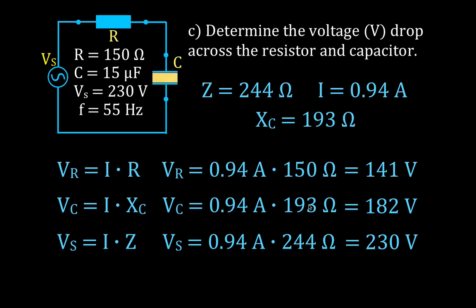According to Kirchhoff's Laws, the sum of the voltage drops should equal the voltage gain. You'll notice that 144 plus 182 equals 326, which is more than 230. But these are time-varying values — all three are changing over time because we have an AC source. At any point in time, however, the two voltage drops will sum to equal the source voltage.